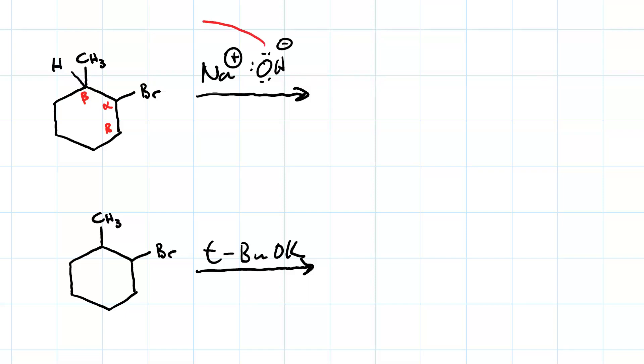So our proton transfer will look like this. And then there's our loss of a leaving group. And we get our 1-methylcyclohex-1-ene, the Zaitsev product.